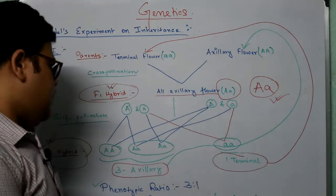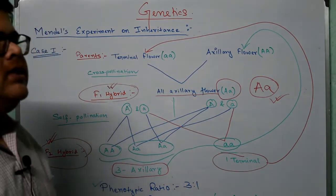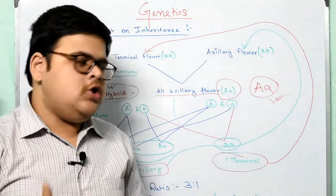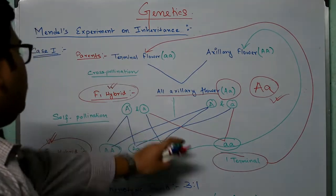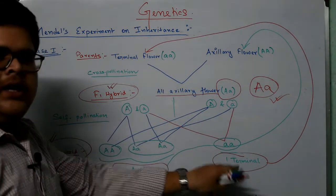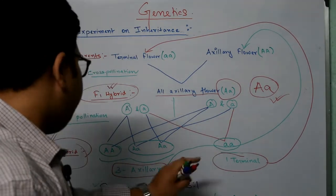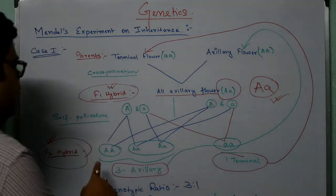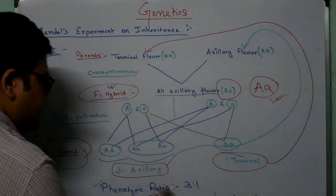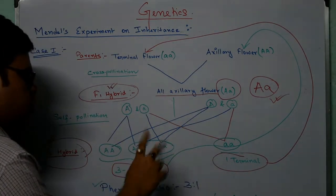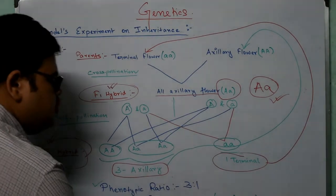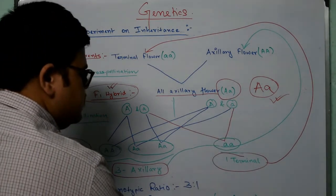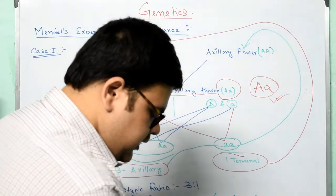Phenotypic ratio is the thing that is visible in front of us — what we see. Looking at the F2 generation, we found 3 axillary and 1 terminal, so the phenotypic ratio is 3:1. Looking into the genotypic ratio: we have 1 with both capital A's (AA), 2 with one capital A and one small a (Aa), and 1 with both small a's (aa) — giving us a genotypic ratio of 1:2:1. This is what happened in case 1.